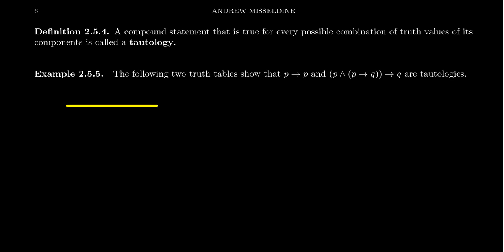With this statement p implies p, there's only one primitive in play here, and that's the primitive p itself. So we need to look at the truth values for p. I'm only going to have two rows because there's only one primitive here, and then compare the statement p implies p.